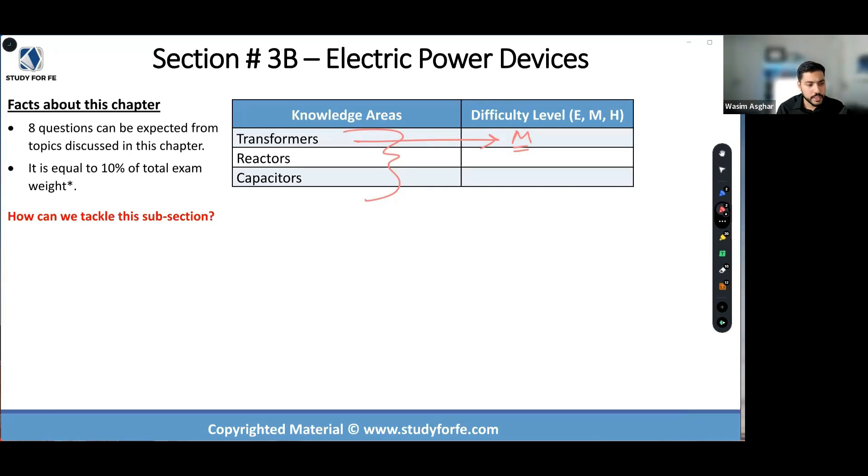We looked at circulating currents. We discussed why the voltages have to be perfectly equal, otherwise we get circulating current. As far as derivations are concerned, I'm a big fan of derivations. I've derived practically everything that I could in the context of the PE Power exam. My recommendation has been to go through derivations at least once. You don't need to go through derivations again and again. It's not a high yielding activity in the context of the PE Power exam.